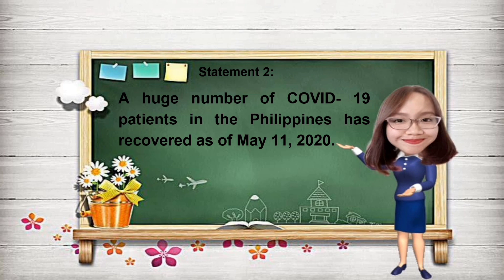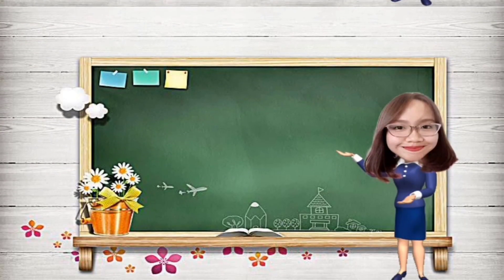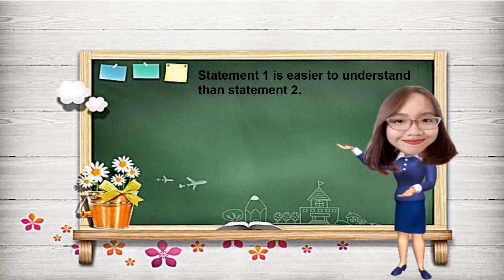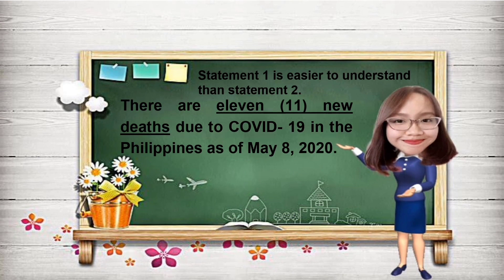You are correct. Statement number one is easier to understand because it provides an exact number of deaths due to COVID-19. Unlike in statement number two, which just used the word 'huge' to describe the number of recovered COVID-19 patients. This means that the use of numerical data helps readers or audience to easily understand the meaning of a statement or information presented to them.